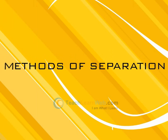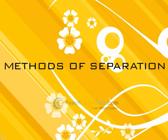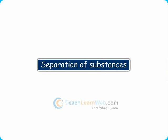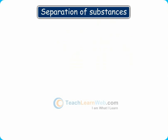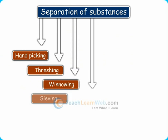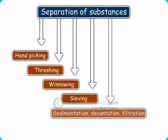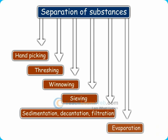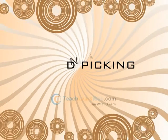Methods of separation: separation of substances can be done by different methods like hand-picking, threshing, winnowing, sieving, sedimentation, decantation, filtration, and evaporation.